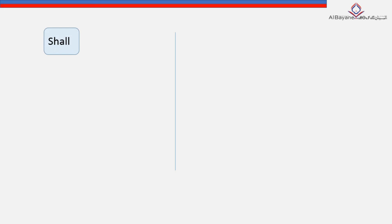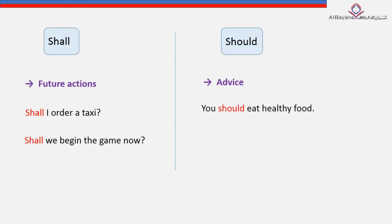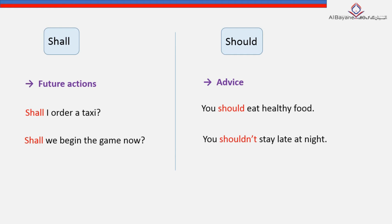'Shall' is used to indicate future actions or suggestions, and is usually used with the pronouns 'I' or 'we.' Such as: 'Shall I order a taxi?' or 'Shall we begin the game now?' While 'should' is used for giving advice. For example: 'You should eat healthy food,' or 'You shouldn't stay late at night.' Both examples indicate advice.